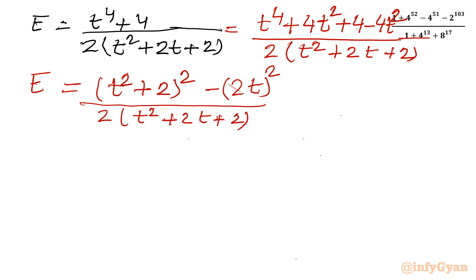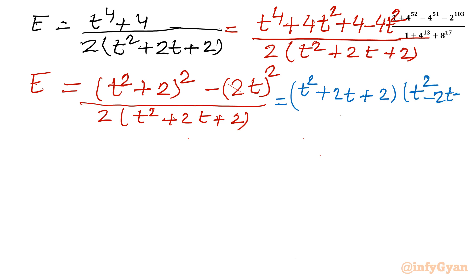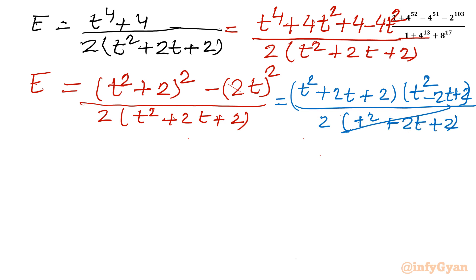The denominator is 2 times t squared plus 2t plus 2. Now the difference of two squares formula applies: a plus b times a minus b. So I can write the numerator as t squared plus 2t plus 2 times t squared minus 2t plus 2. The denominator is 2 times t squared plus 2t plus 2. The first bracket in the numerator cancels with the denominator factor.